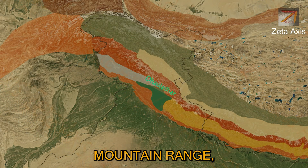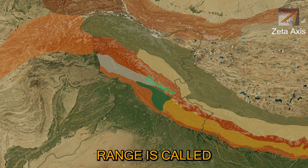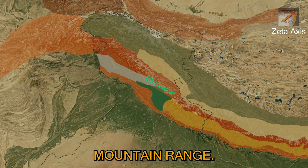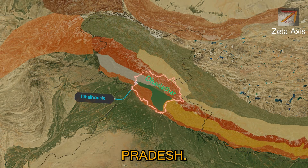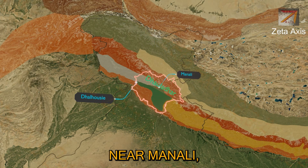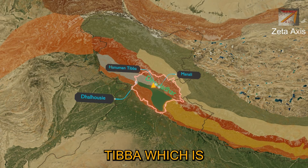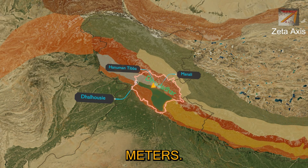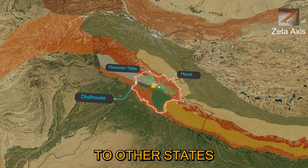The next part of Lesser Himalayas is the Dhaladhar mountain range. The Lesser Himalayas in the Himachal Pradesh region is called the Dhaladhar mountain range. It starts from Dalhousie and stretches across Himachal Pradesh, merging with the Pirpanjal range near Manali. The highest peak in the Dhaladhar range is Hanuman Tibba, which is about 5980 meters. The Dhaladhar ranges are found only in Himachal Pradesh and do not spread to other states.